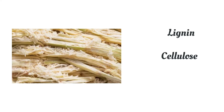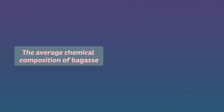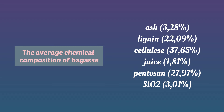Bagasse is a solid waste of the sugarcane industry which contains lignin, cellulose, and hemicellulose fibers — byproducts of the sugarcane extraction process. Based on chemical analysis, the average chemical composition of bagasse is: ash 3.228 percent, lignin 22.9 percent, cellulose 37.65 percent, juice 1.81 percent, pentosan 27.97 percent, and SiO₂ 3.1 percent.